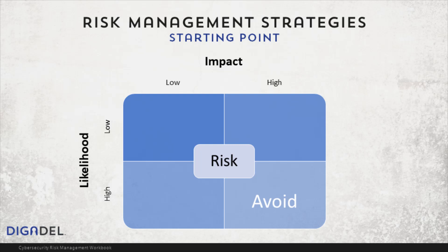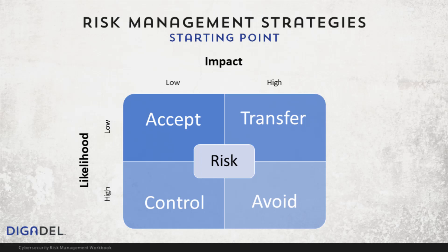The avoid strategy is useful for risks that are high likelihood and high impact. The control strategy may be appropriate for risks that are high likelihood but low impact. The accept strategy tends to be appropriate for risks that are low likelihood and low impact. Finally, the transfer strategy is often applied to risks that are low likelihood and high impact.